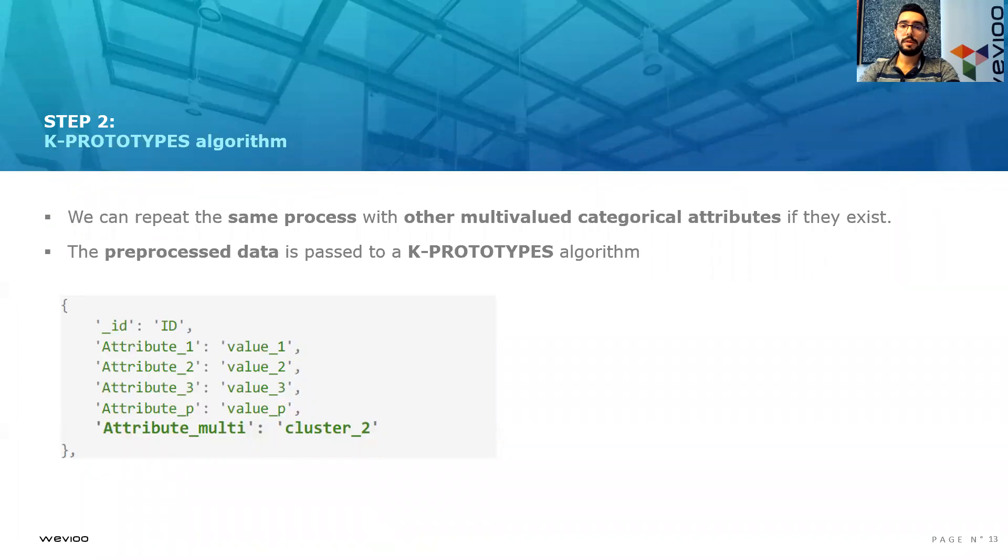What I would like to note here is that we may not have only one categorical multivalued attribute, but we may have multiple ones. The same process can be applied on all of these attributes to make them single-valued. Next, the preprocessed data, along with our continuous and categorical attributes from our initial dataset, can be passed to a K-prototypes algorithm to generate clusters of objects.